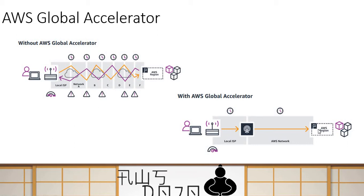Comparing the two approaches: without Global Accelerator you're hopping between multiple networks to reach your endpoint, whereas with Global Accelerator your request onboards onto the AWS backbone network, which then gives you an optimized path to your application. This enhances traffic performance, hence application performance and user experience.